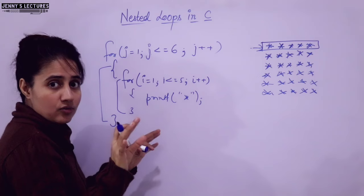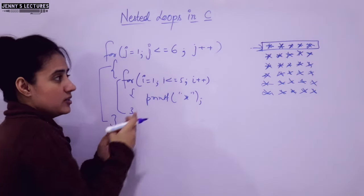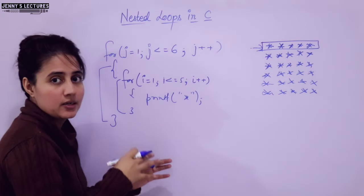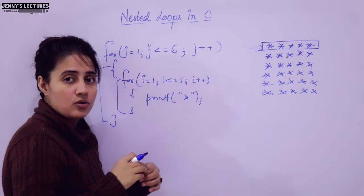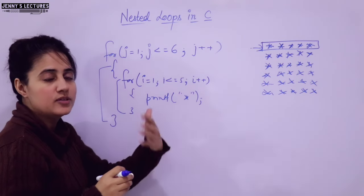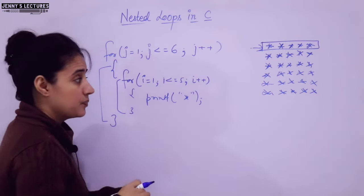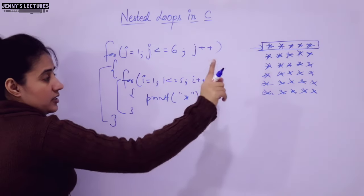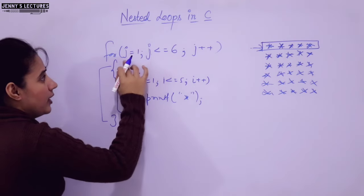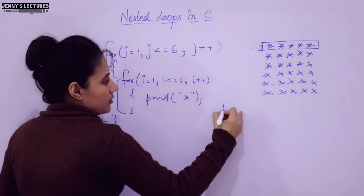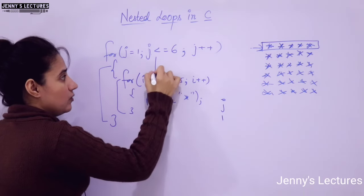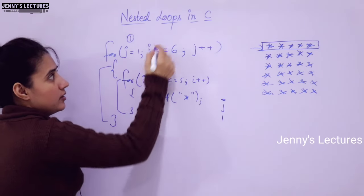So now you are clear why we use nesting of loops. Basically, when you want to print these types of patterns, or work with matrices or 2D arrays and multiple dimensional arrays, we use nesting of loops. Now let us look at the process. First of all — I am not writing the complete program — j value is 1. Is 1 <= 6? True. Control will enter here. Then we check the inner condition.